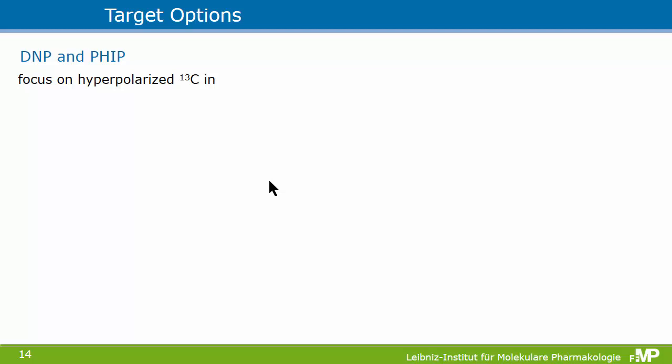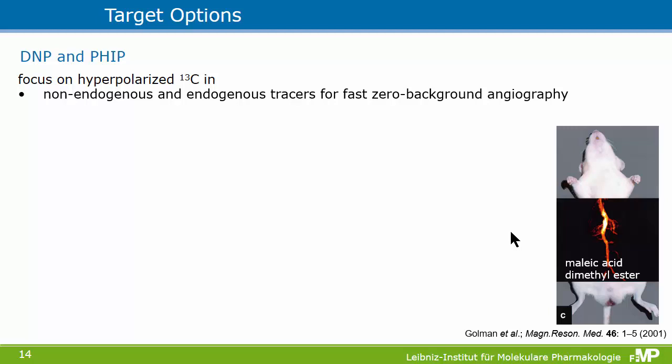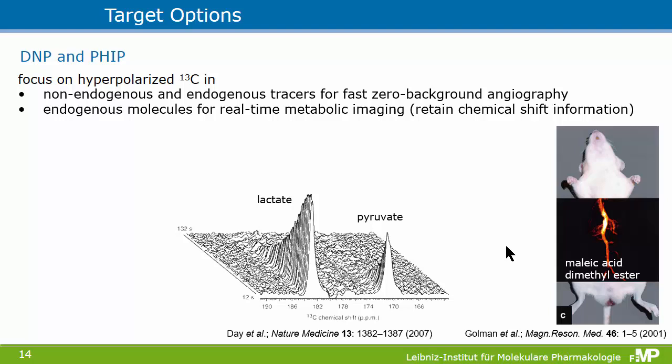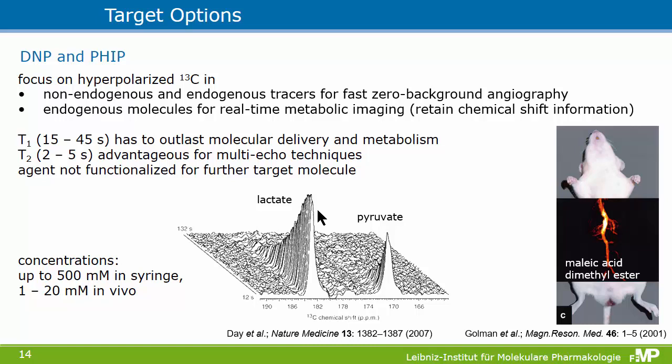What are the targeting options? DNP and PHIP historically focused a lot on hyperpolarized C13. One of the very early examples was single-shot angiography studies, but the focus then moved to real-time metabolic imaging where you give, for example, pyruvate into the animal and observe the conversion into lactate. Pyruvate has a conveniently long T1 relaxation time, giving a certain amount of time to deliver the agent and monitor metabolism. The T2 is also sufficiently long to work with multi-echo techniques, and the concentrations used in early studies were about 500 micromolar in the syringe, reaching about 20 millimolar in vivo.